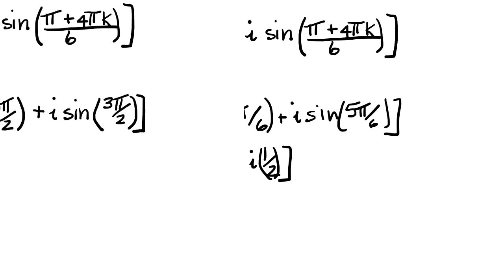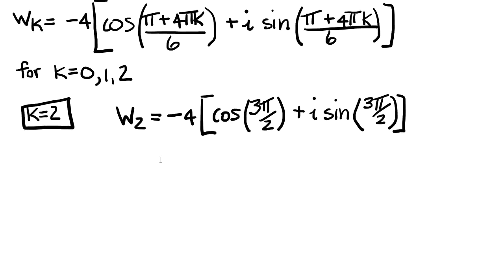Let's calculate that one. The third and final root is when k equals 2. And that's going to equal -4. And cosine of 3π/2 is 0 plus i, or in other words, -4i.